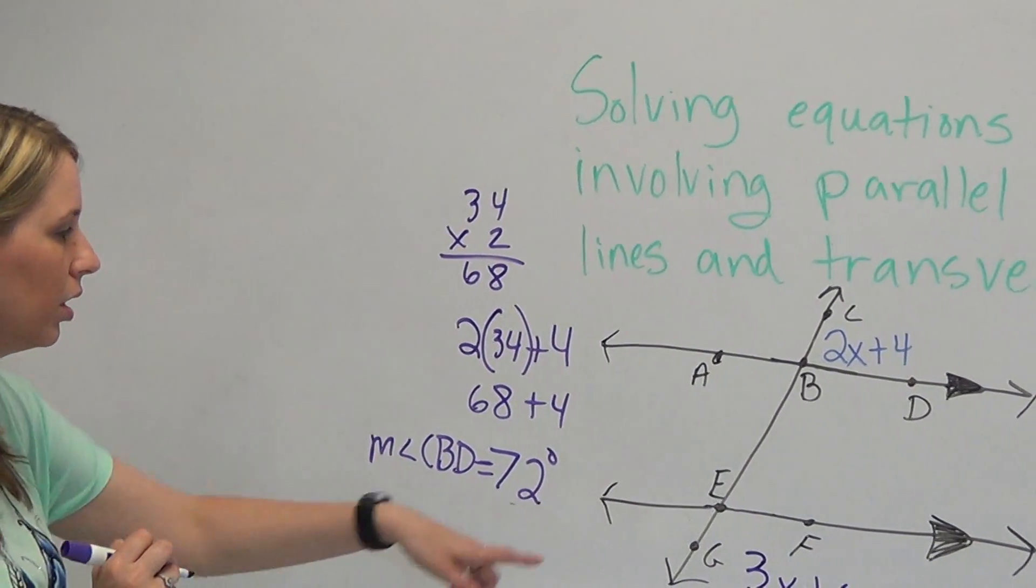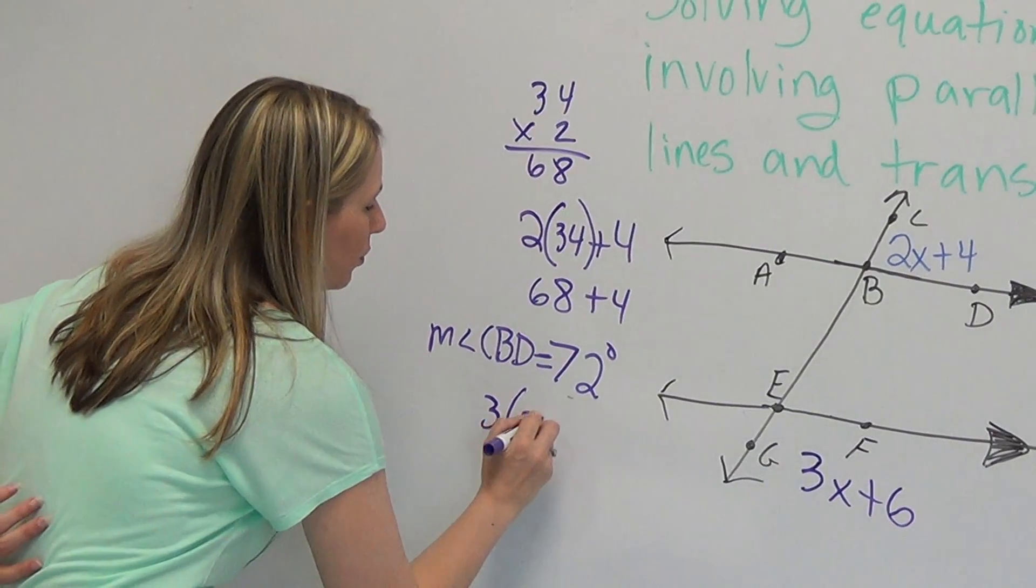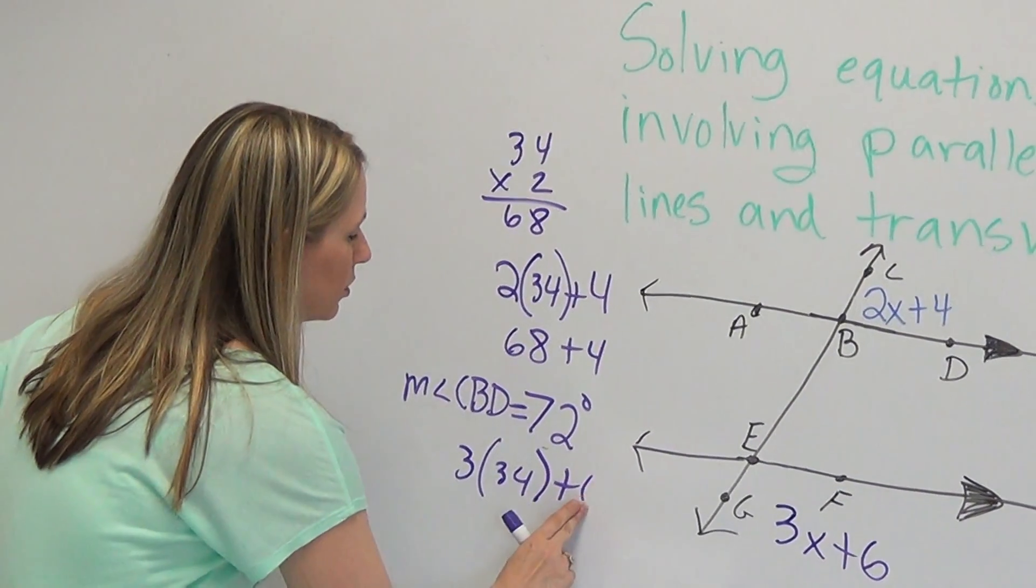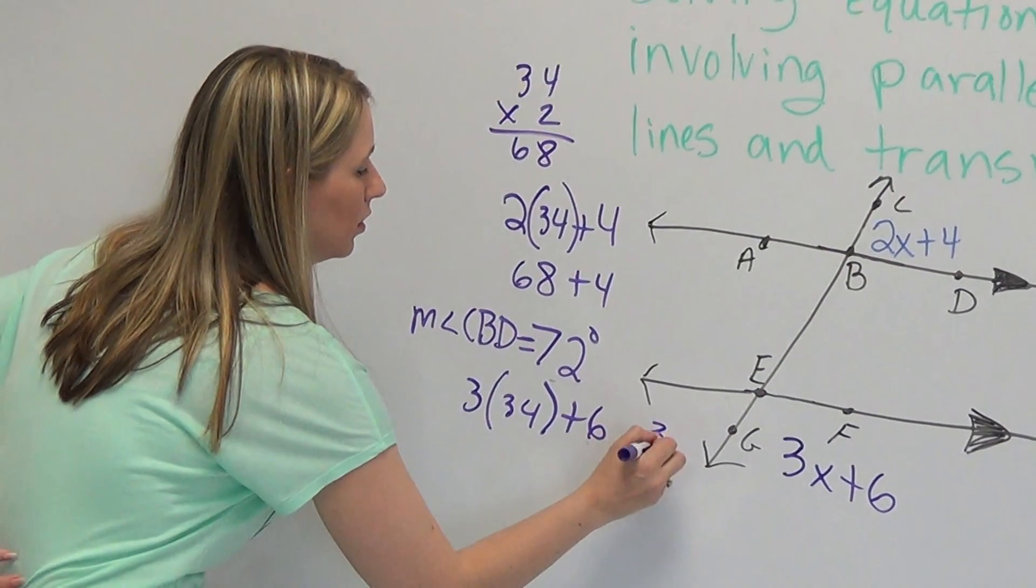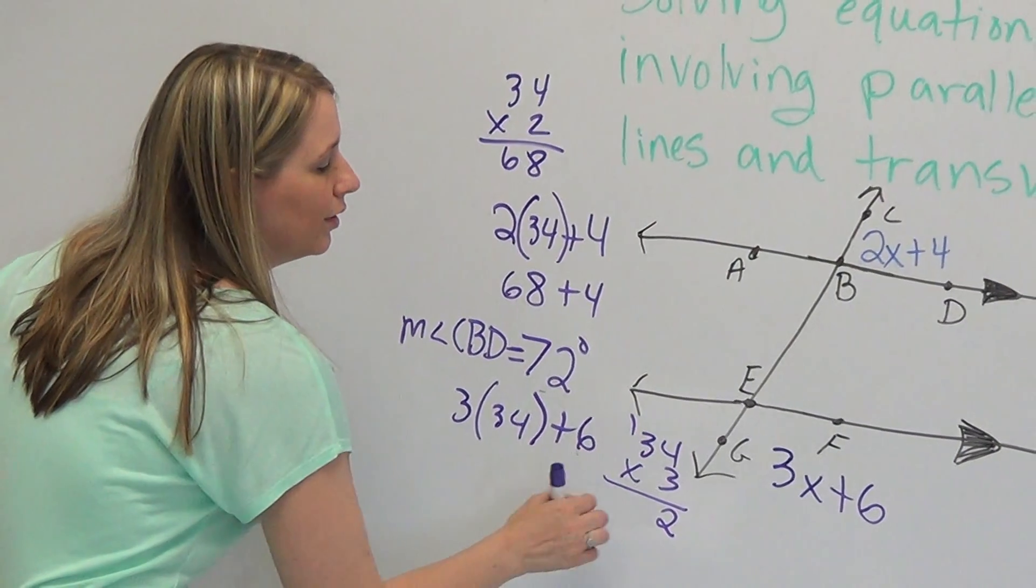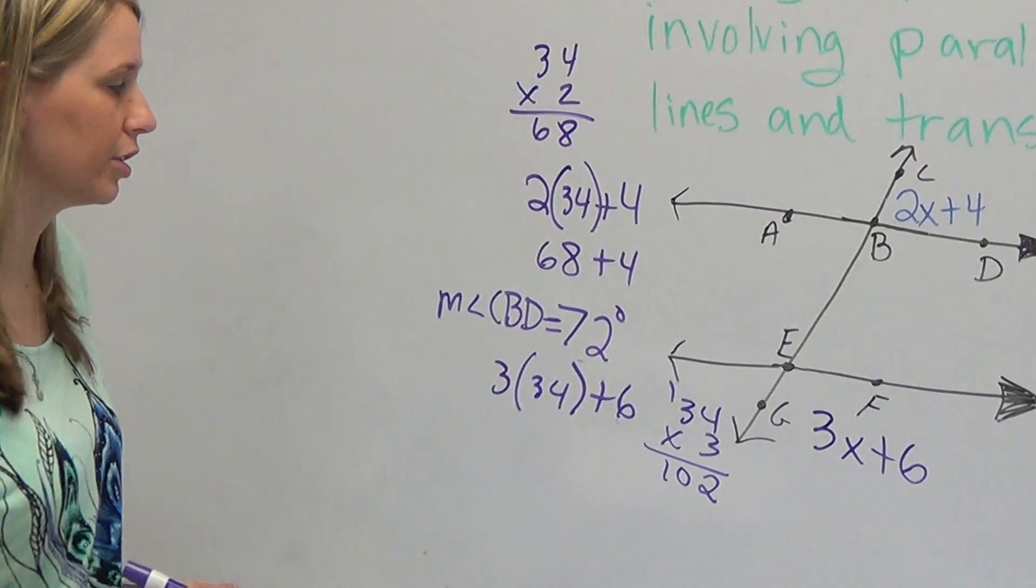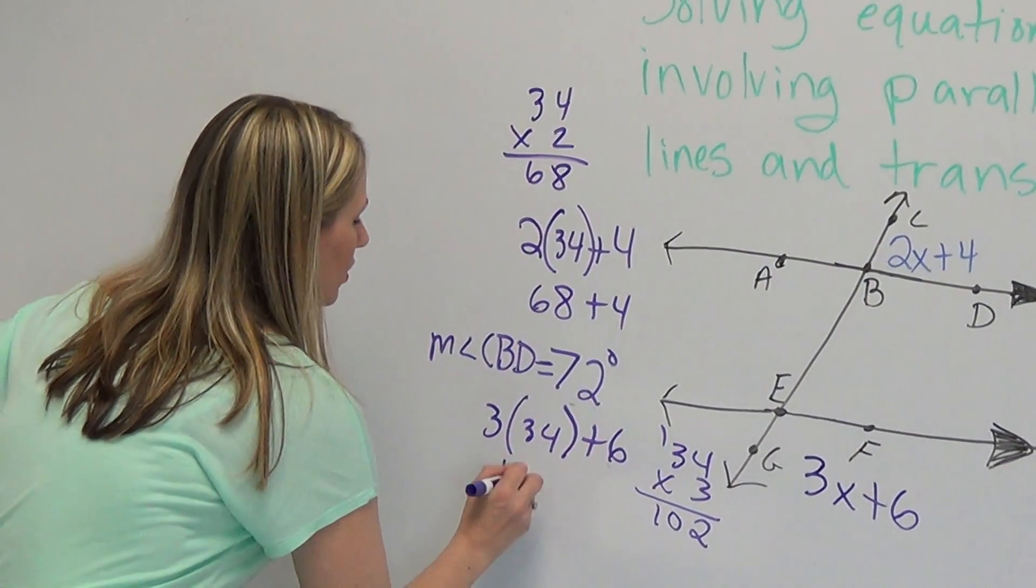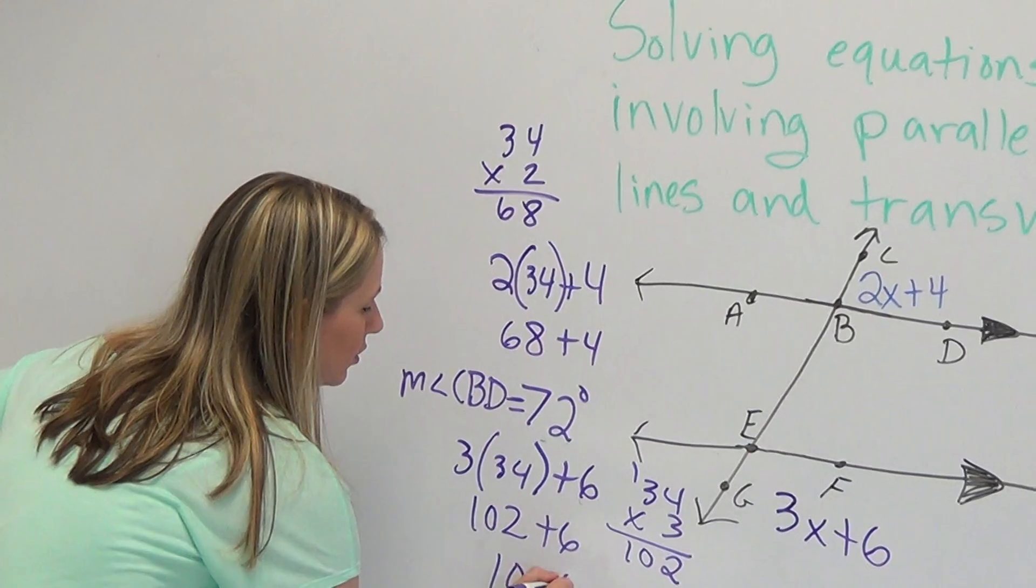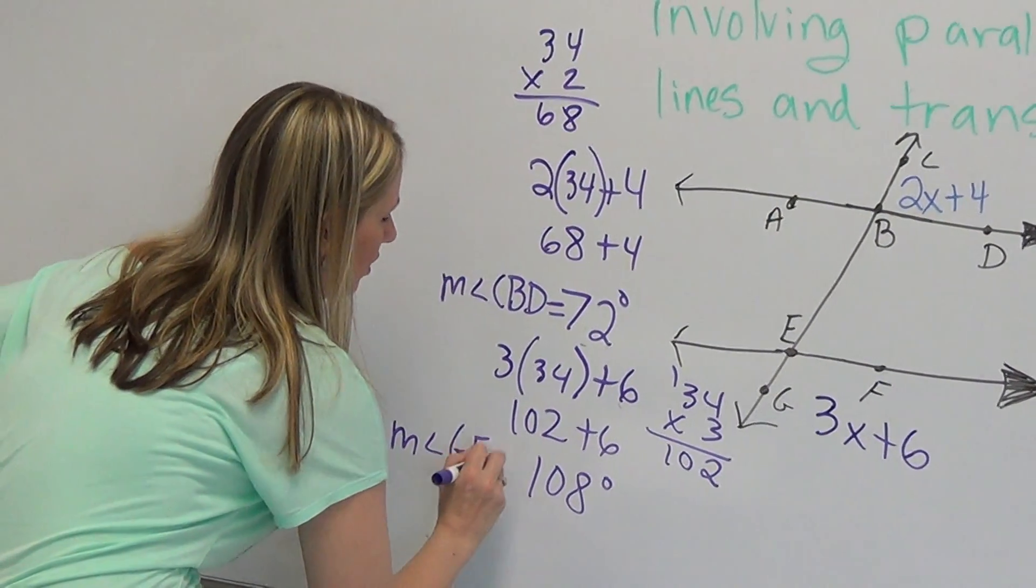Okay. Plugging into the other one. It would be 3 times 34 plus 6. Again, we need to multiply. 34 times 3, that's 12, carry the 1. 3 times 3 is 9, plus 1 is 10. So that's 102. 102 plus 6 is 108 degrees. And that's the measure of angle GEF.